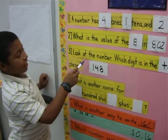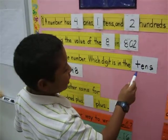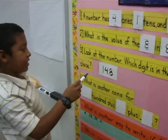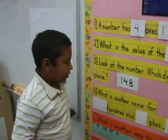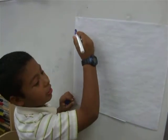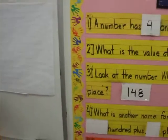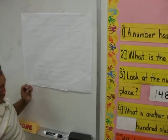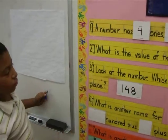Go ahead Luis. Look at the number which digit is in the 10th place. First you draw the number that is in the word and the sentence you're reading.